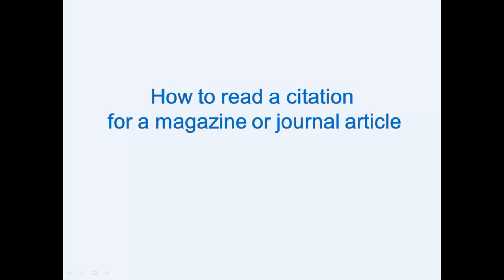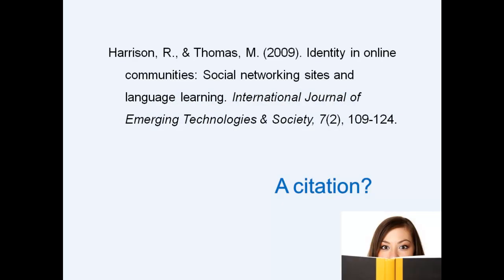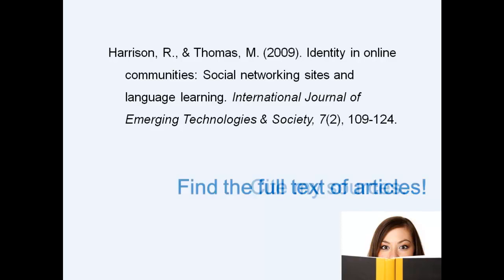The information you need in order to include a journal article in your bibliography or reference list is contained in what is known as a citation. It's important that you know how to read a citation in order to cite your sources properly. This will help you find an article when its full text is not available online.